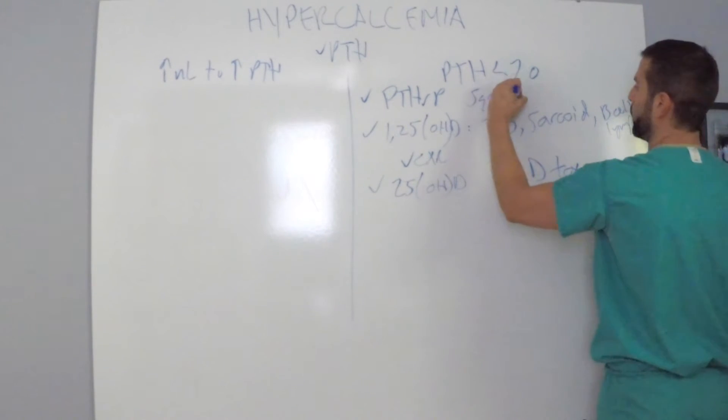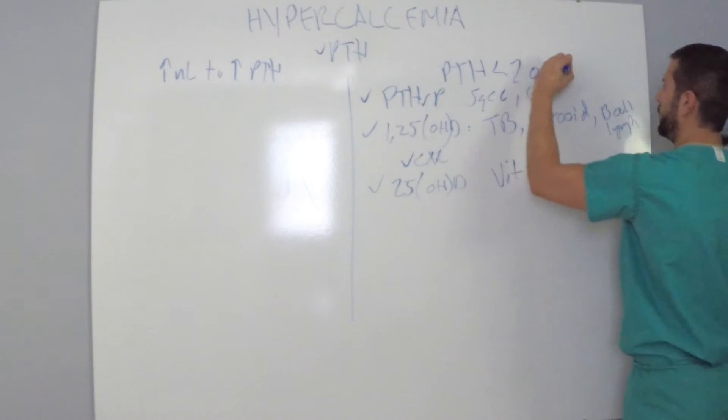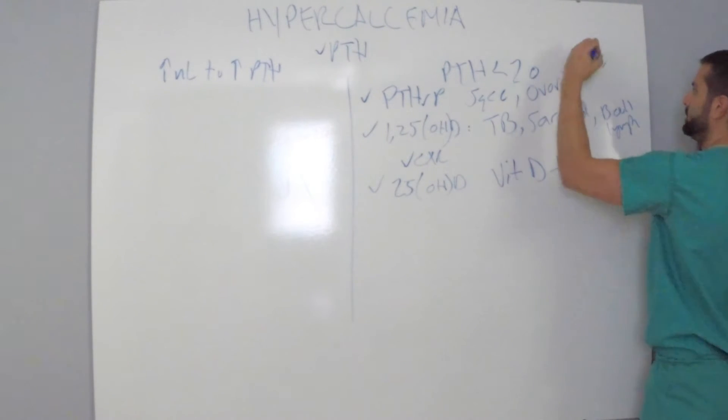These people, as I said, ovarian adenocarcinoma, also breast adenocarcinoma could cause hypercalcemia, and also T-cell lymphoma.